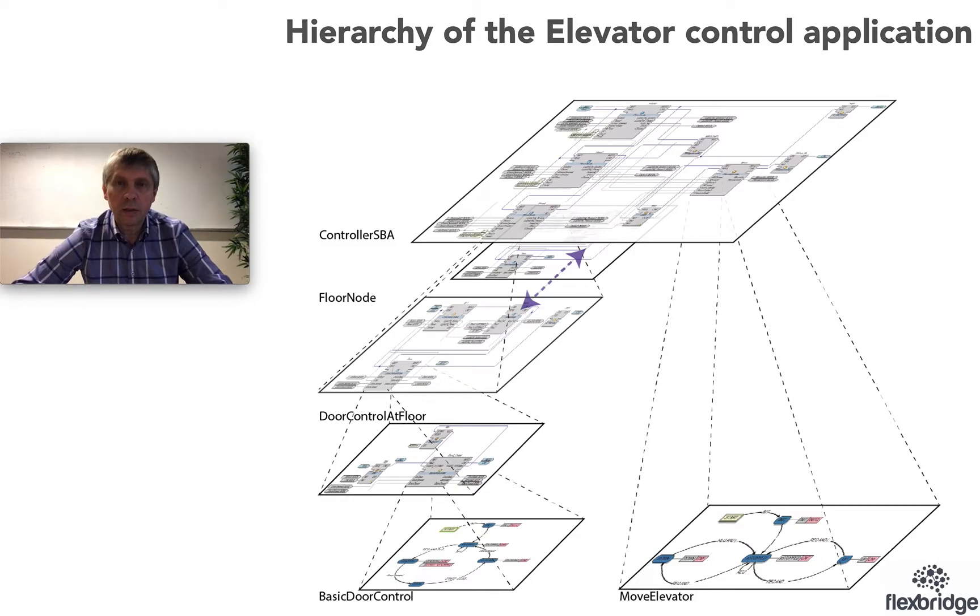The overall application structure is hierarchical. On the top level we have these four blocks connected to each other and then each of the floor nodes actually is another network of function blocks. Inside the floor node we will have two components, one responsible for door control and another responsible for taking call signals, and they will be together connected to the component responsible for negotiation with other floor nodes, and so on and so forth. In the bottom level we have blocks that are described using state machines, such as basic door control and the move elevator that is located on the top level of our application but is also a basic function block described via state machine.